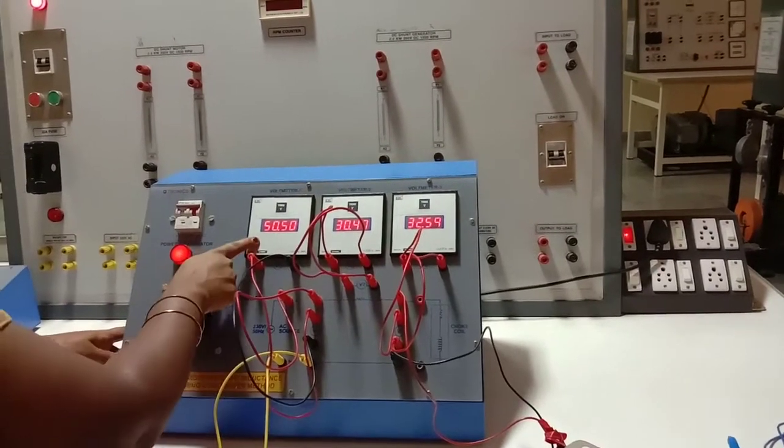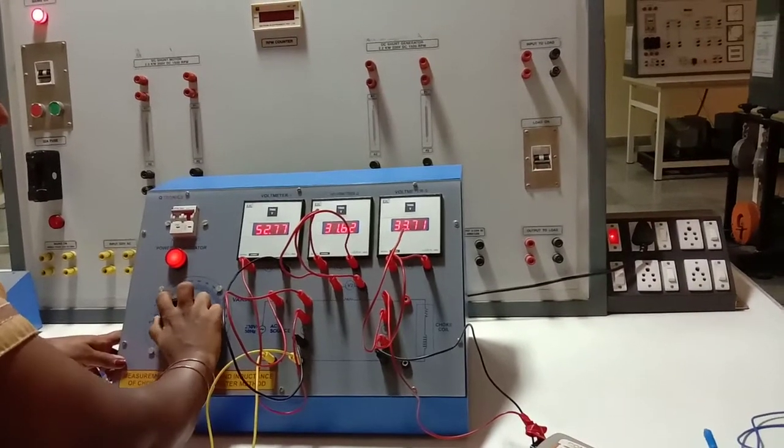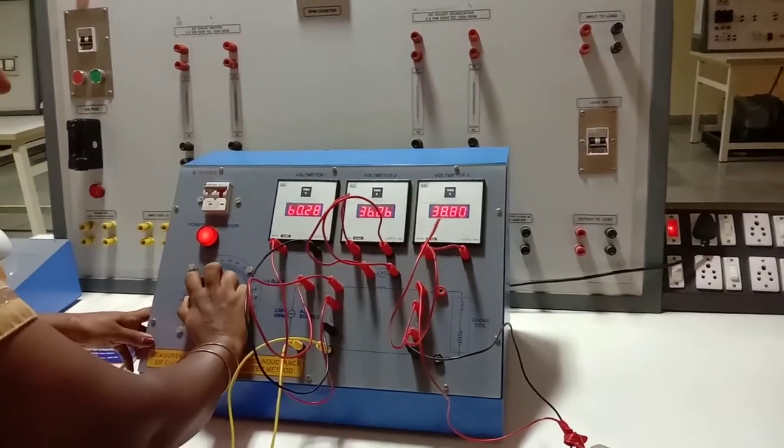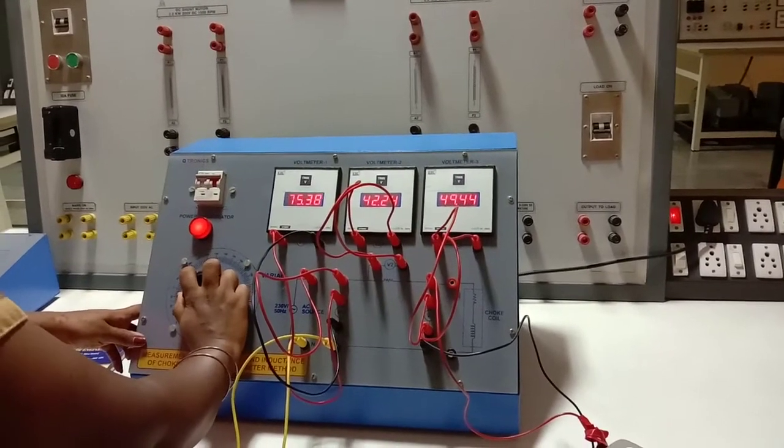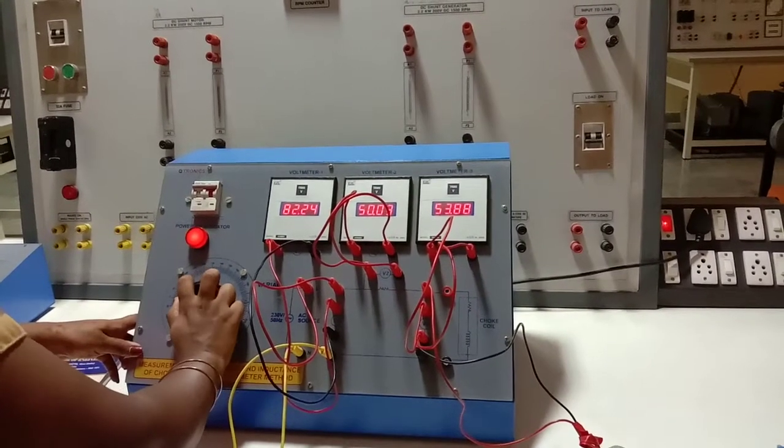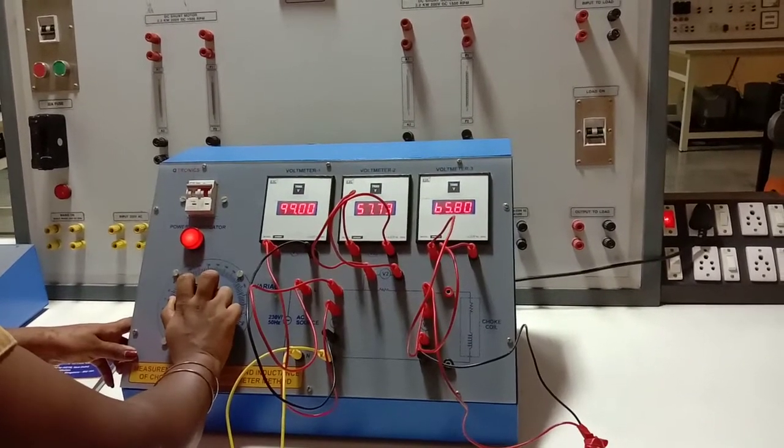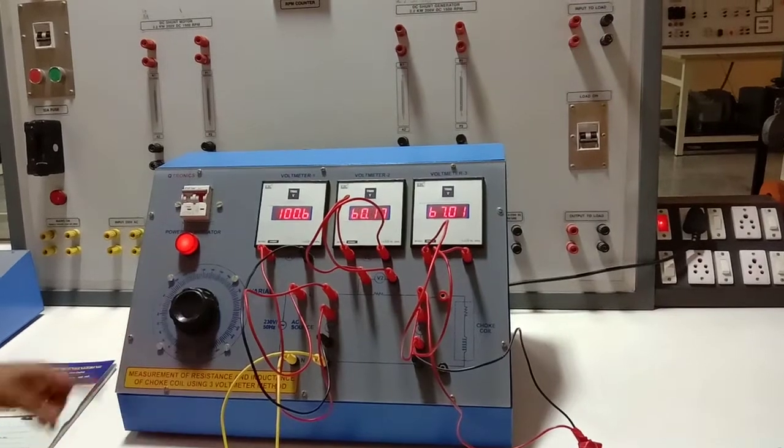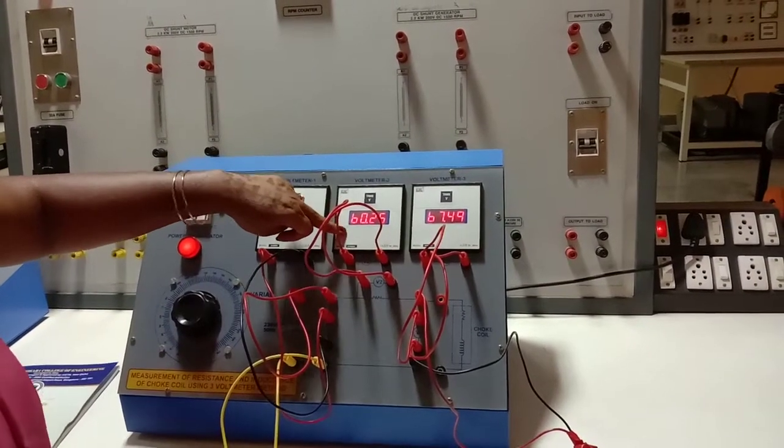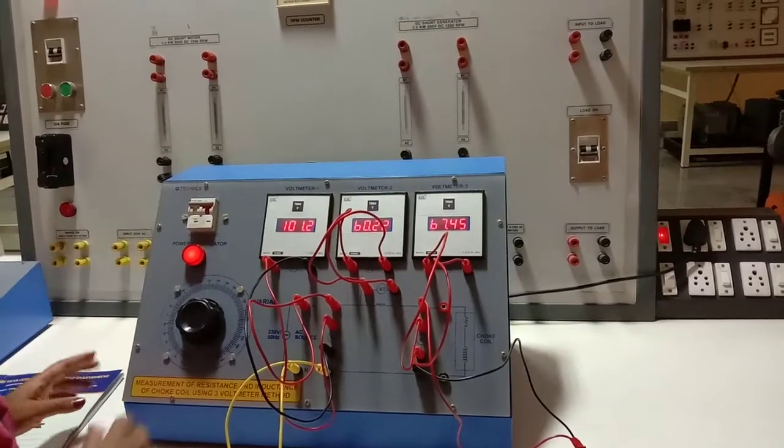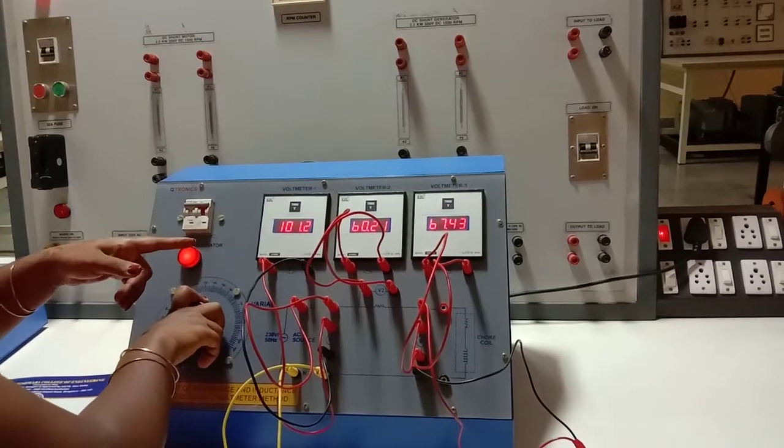Second case, I will just increase the value of V1 to 100. So I am getting 100.6, no issues. The second reading is 60, third reading is 67. Note down this reading also.